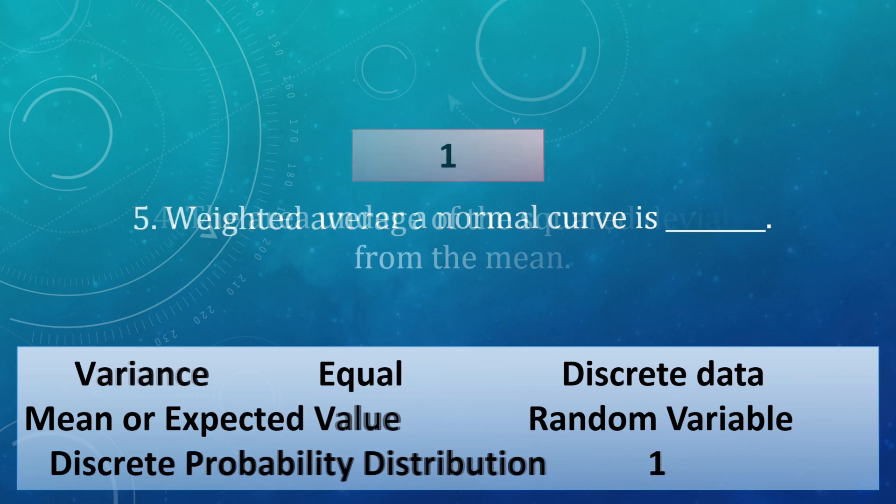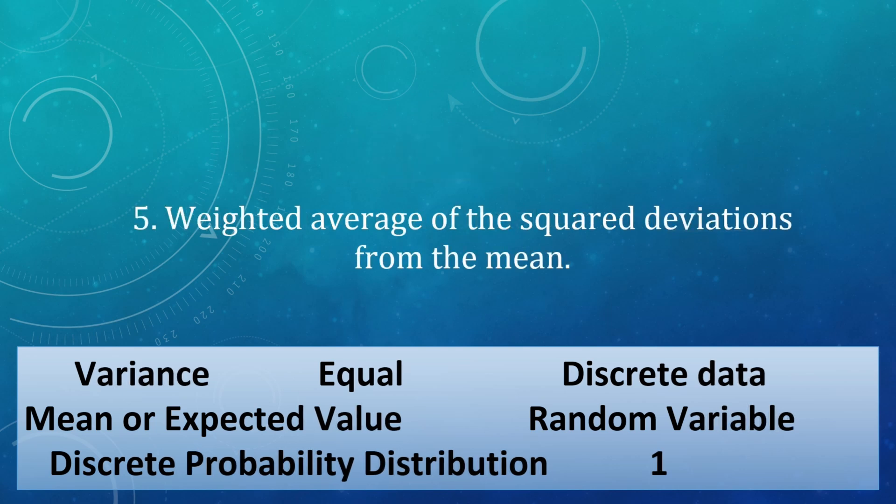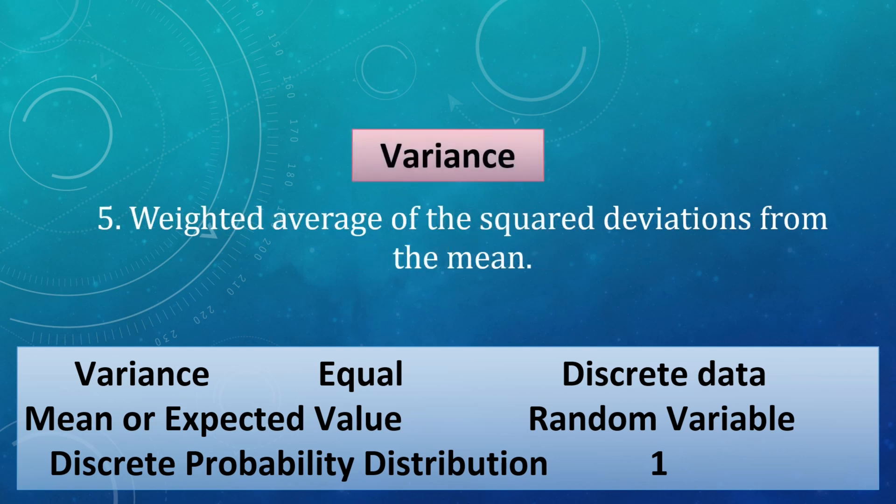Next, weighted average of the square deviations from the mean. So, it is called as variance, correct?